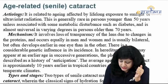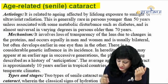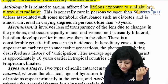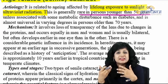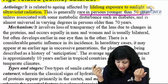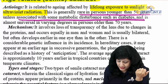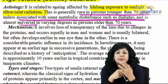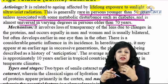Now starting with the most common cataract — senile or age-related cataract. It is related to aging and lifelong exposure to sunlight and ultraviolet radiation. Generally rare in persons younger than 50 years; unless associated with metabolic disturbances like diabetes, it is almost universal in patients over 70 years. In diabetics, senile cataract can occur at a younger age group — called presenile cataract.